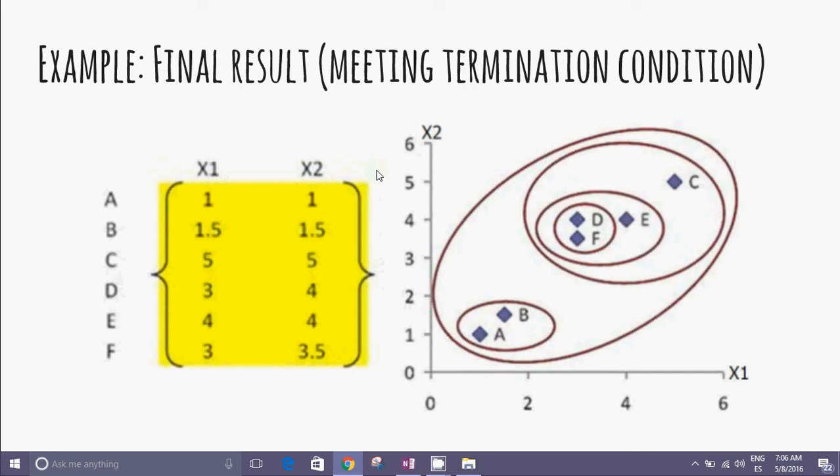And this is the final result, the termination condition. This is the initial data matrix, features and elements. This is the grouping we have made.